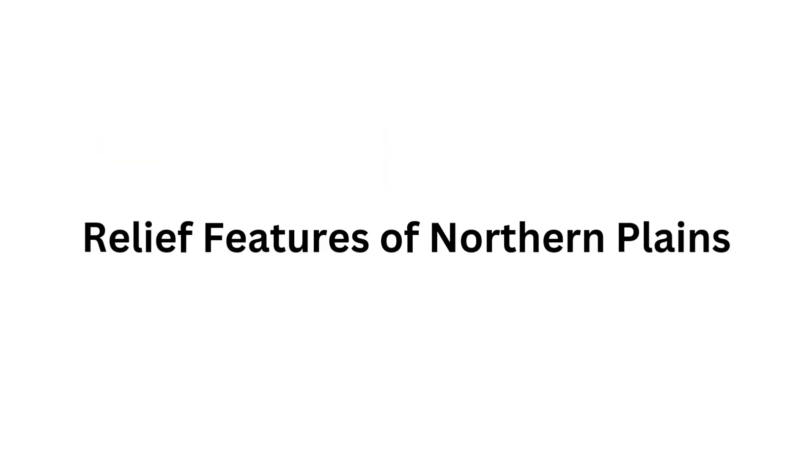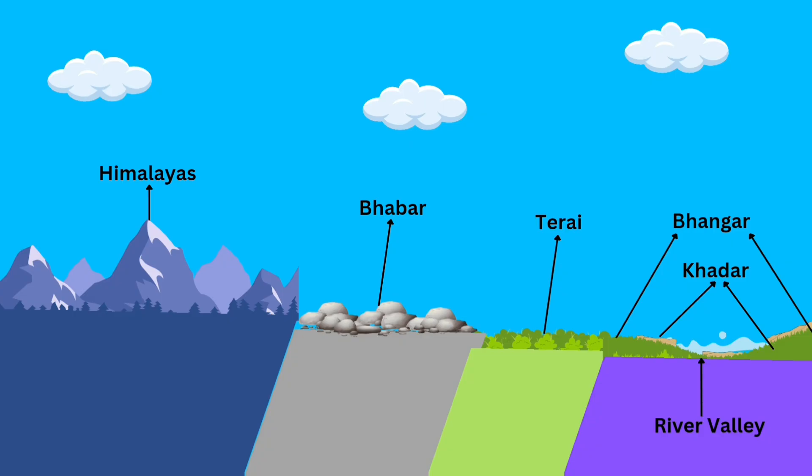Based on the relief features, the Northern Plains can be divided into the following regions: Bhabar, Terai, Bangar, and Khadar.